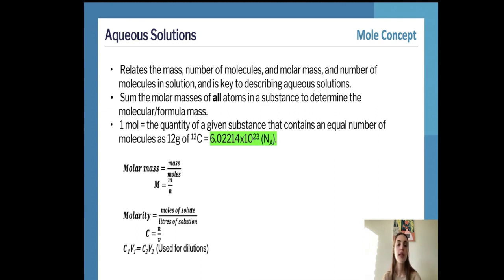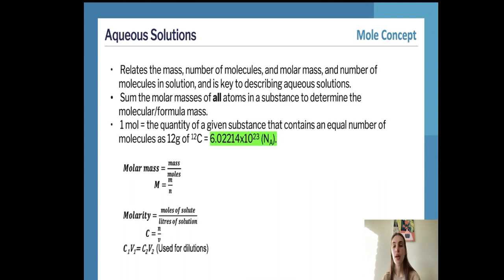We also use the dilution formula C₁V₁ = C₂V₂. Here, C₁ and V₁ are characteristic of our starting solution, while C₂ and V₂ are characteristic of our finishing solution.